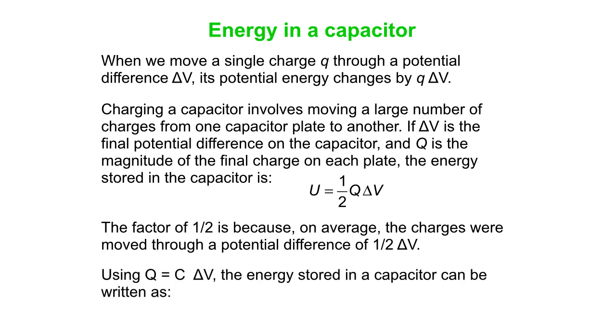And we can say that the energy stored, you can write in a number of different ways. Replacing Q by C delta V in the equation, for instance, you can write it as one-half Q delta V, one-half C delta V squared, or Q squared over 2C.